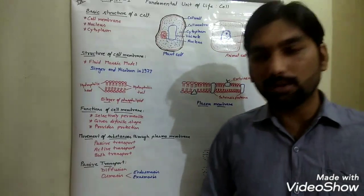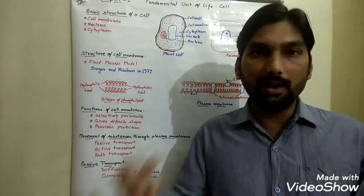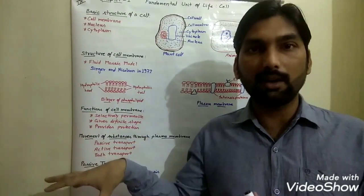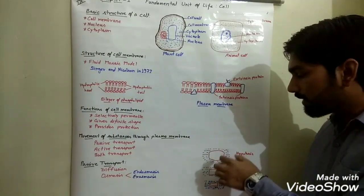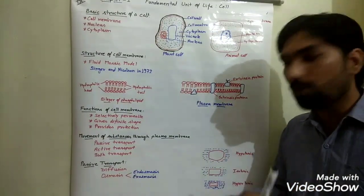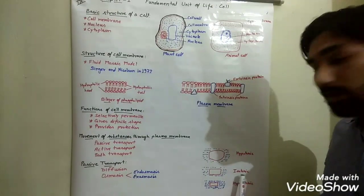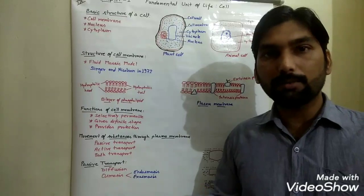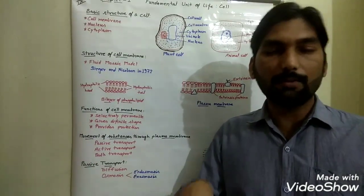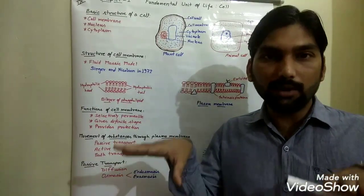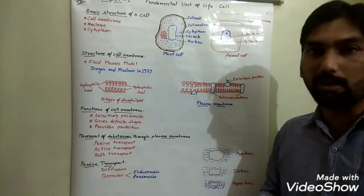Whenever any cell is placed in a solution, based on the amount of solute, the solution may be hypotonic, isotonic, or hypertonic. In a hypotonic solution, the surrounding water has less amount of solute, so water concentration is much higher outside and less inside the cell. When a cell is placed in a hypotonic solution, it absorbs water through endosmosis and the cell swells. In an isotonic solution, the amount of solute and water is equal inside and outside the cell, so no movement of water molecules occurs and the cell remains in its regular state.